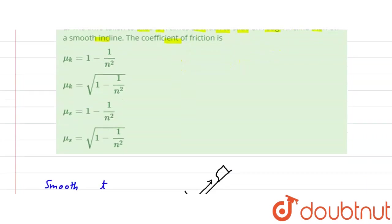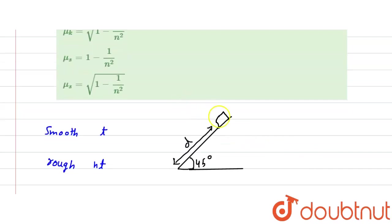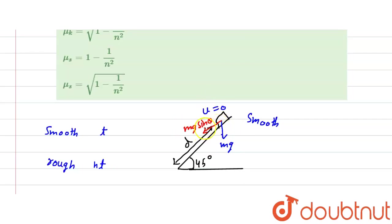First, for the smooth case, the normal reaction is zero friction. The weight mg acts downward. The component along the incline is mg sinθ and perpendicular is mg cosθ, which gives the normal force N. So the acceleration for the smooth case is a1 = g sinθ.